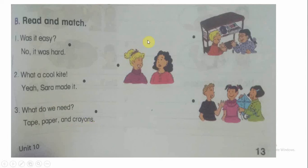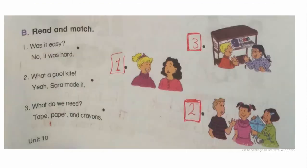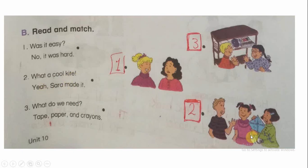Number one: Was it easy? No, it was hard. Number two: What a cool kite. Yeah, Sarah made it — picture number two. Number three: What do we need? Tape. Paper. And crayons.